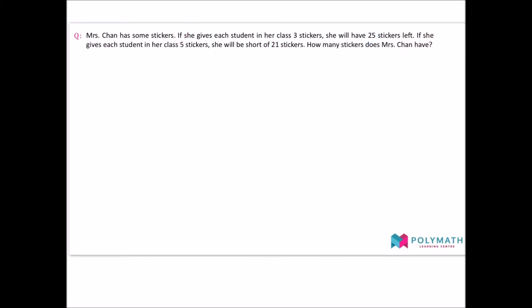Now that we have identified the question as an excess and shortage question, we can proceed to solve it. As we do not know how many students are there in Mrs. Chan's class, we let the number of students be one unit. If the number of students is one unit and Mrs. Chan gives each student three stickers, then she will give a total quantity of three units worth of stickers. Mrs. Chan is able to give three units worth of stickers and still have 25 stickers remaining, so her amount must be 25 more than three units.